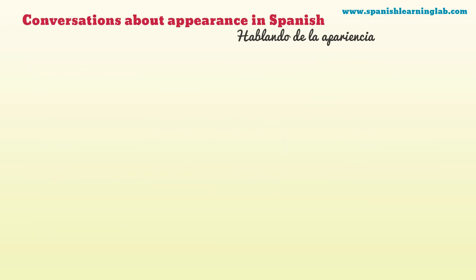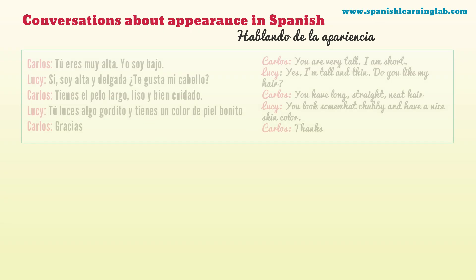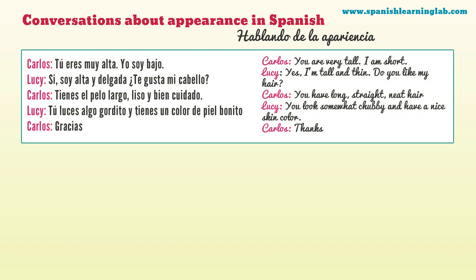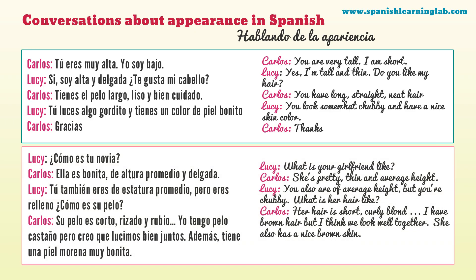Conversations about appearance in Spanish — Hablando de la apariencia. Here are two examples of simple conversations using the vocabulary, phrases, and questions in this video. First conversation: Tú eres muy alta. Yo soy bajo. Sí, soy alta y delgada. ¿Te gusta mi cabello? Tienes el pelo largo, liso y bien cuidado. Tú luces algo gordito y tienes un color de piel bonito. Gracias. Second conversation: ¿Cómo es tu novia? Ella es bonita, de altura promedio y delgada. Tú también eres de estatura promedio pero eres relleno. ¿Cómo es su pelo? Su pelo es corto, rizado y rubio. Yo tengo pelo castaño pero creo que lucimos bien juntos. Además tiene una piel morena muy bonita.